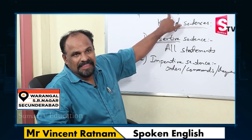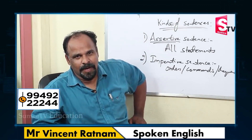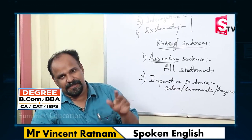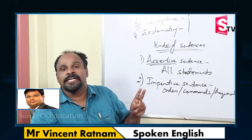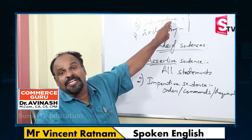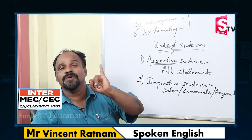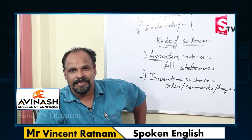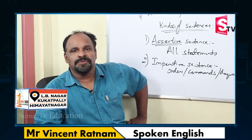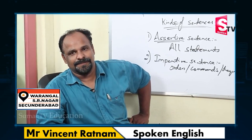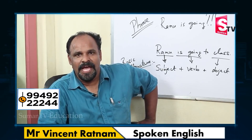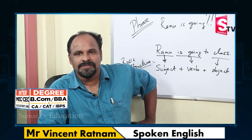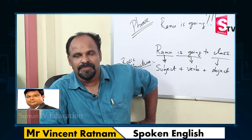So to summarize: the third kind is interrogative sentences — these are questions; and the fourth kind is exclamatory sentences — these express sudden feelings. Today we discussed these kinds of sentences. Thank you for watching this video. If you liked the video, please give your likes, comments, and shares. If you have any doubts, you can put them in the comments section. Thank you, have a nice time.